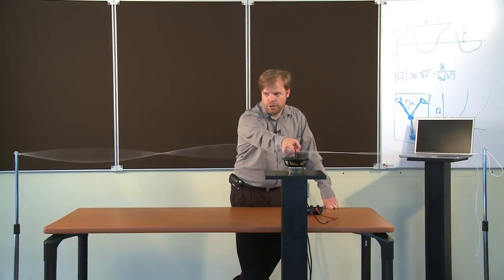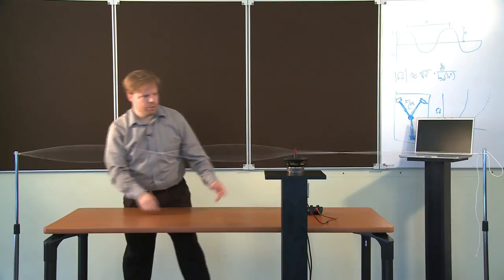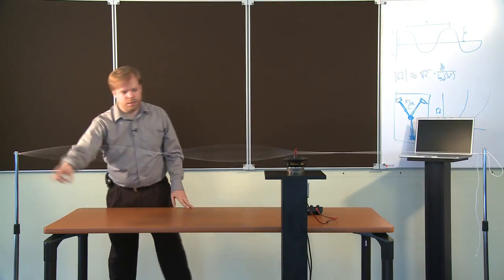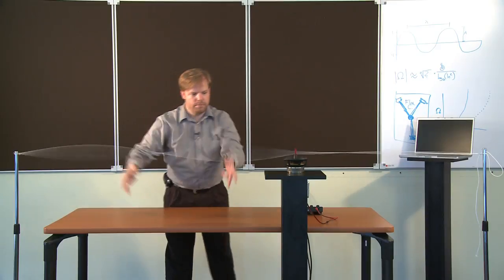So we have our first node, our middle node, and our last node. So this would be 0 degrees, 180, 360 degrees, and then our two nodes are here. Anti-nodes are here.